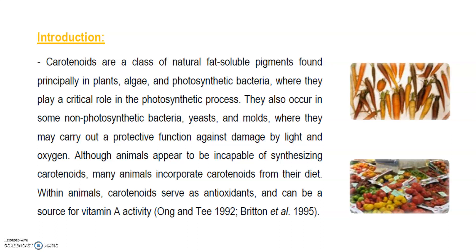Carotenoids are a class of natural fat-soluble pigments found principally in plants, algae, and photosynthetic bacteria, where they play a critical role in the photosynthetic process. They also occur in some non-photosynthetic bacteria, yeast, and molds, where they may carry out protective functions against damage by light and oxygen. Although animals appear to be incapable of synthesizing carotenoids, many animals incorporate carotenoids from their diet. Within animals, carotenoids serve as antioxidants and can be a source for vitamin A activity.